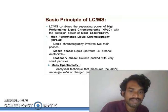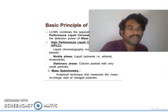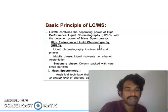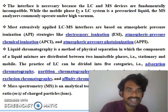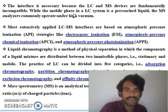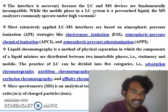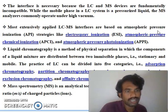Mass spectroscopy is one of the analytical techniques that measures the mass-to-charge ratio of charged particles. That is the actual principle of LC-MS — liquid chromatography and mass spectroscopy. The interface is necessary because the LC and MS devices are fundamentally incompatible: while the mobile phase in a liquid system is a pressurized liquid, mass analyzers commonly operate under high vacuum.